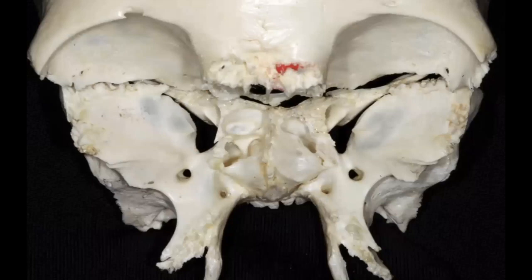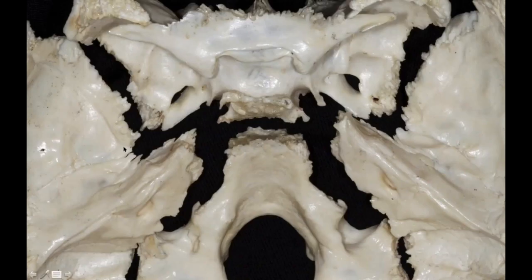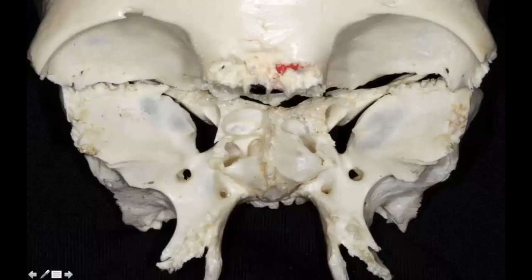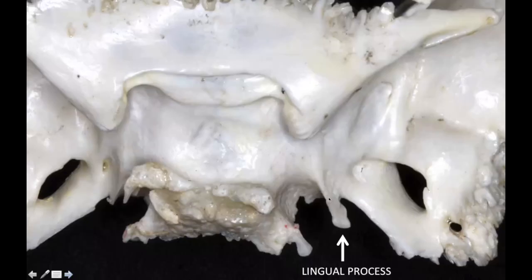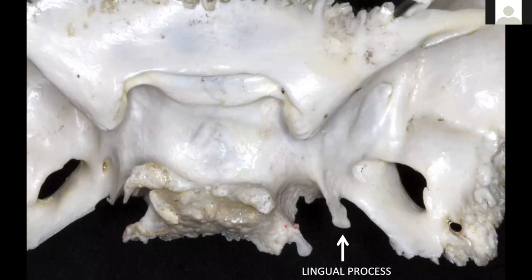This is a frontal view, which we generally see through our endoscopic approaches. I want to show this lingual process — a projection from the sphenoid going backward. Here we have the attachment of the petrolingual ligament, going from petrous to lingual. This is the point where the ICA enters inside the cavernous sinus. We are sometimes confused about which is the cavernous ICA and which is outside the cavernous ICA.